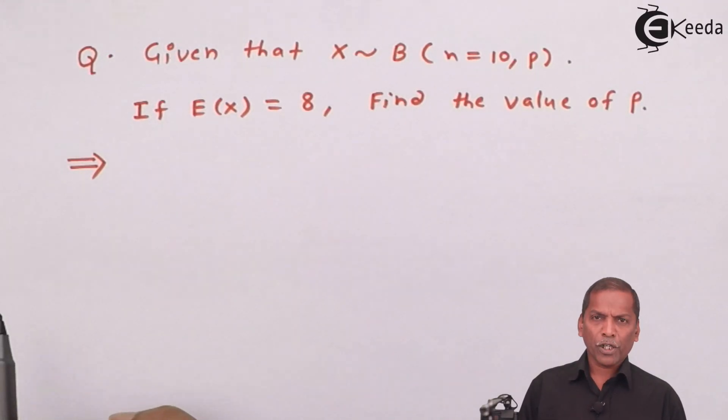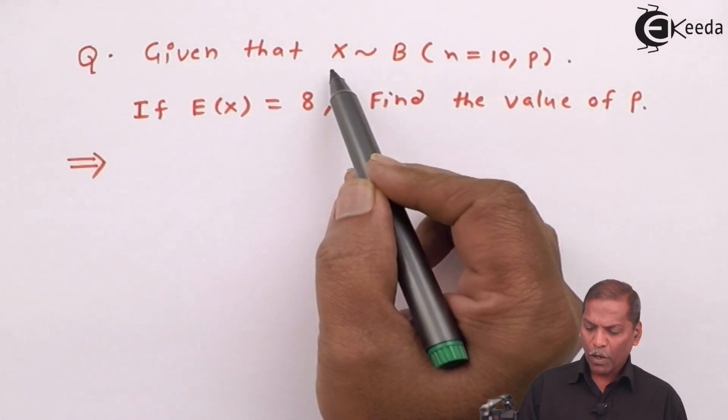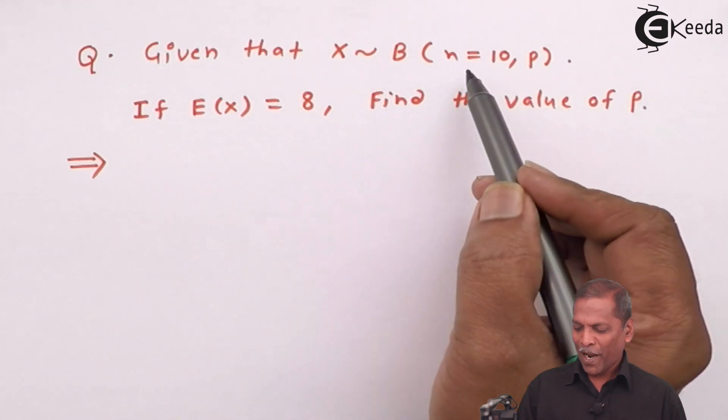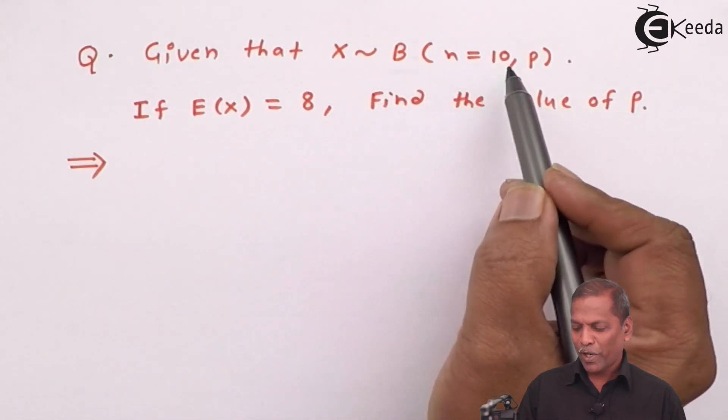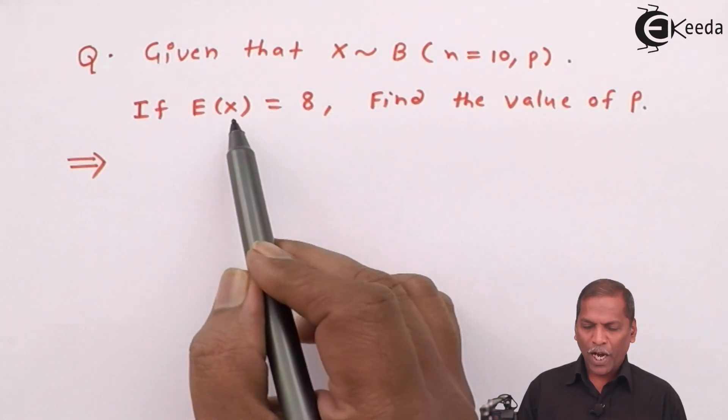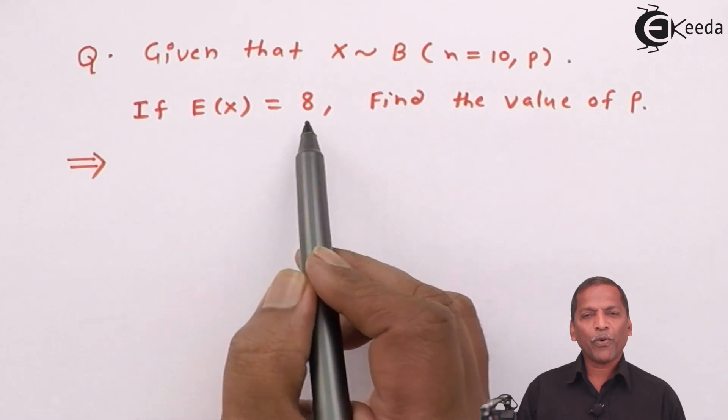Now, see the question here. Given that X follows binomial distribution with parameter n equal to 10 and P. If expected value of X, that is E(X) is equal to 8, then we have to find the value of P.